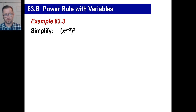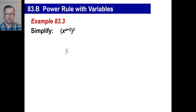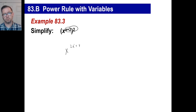Go ahead and copy that down. You have x to the a plus 2 power, and the entire thing gets raised to the second power. All you have to do is keep your x, and then multiply: 2 times a is 2a, and 2 times 2 is 4. So the answer is x to the 2a plus 4. That's it.